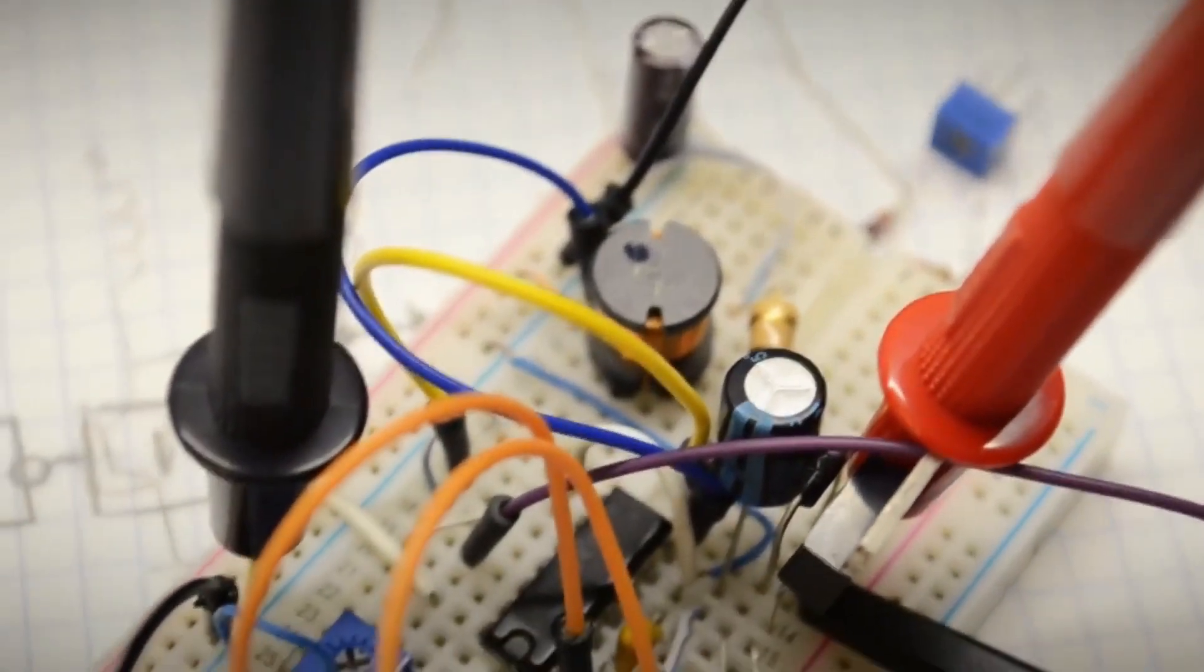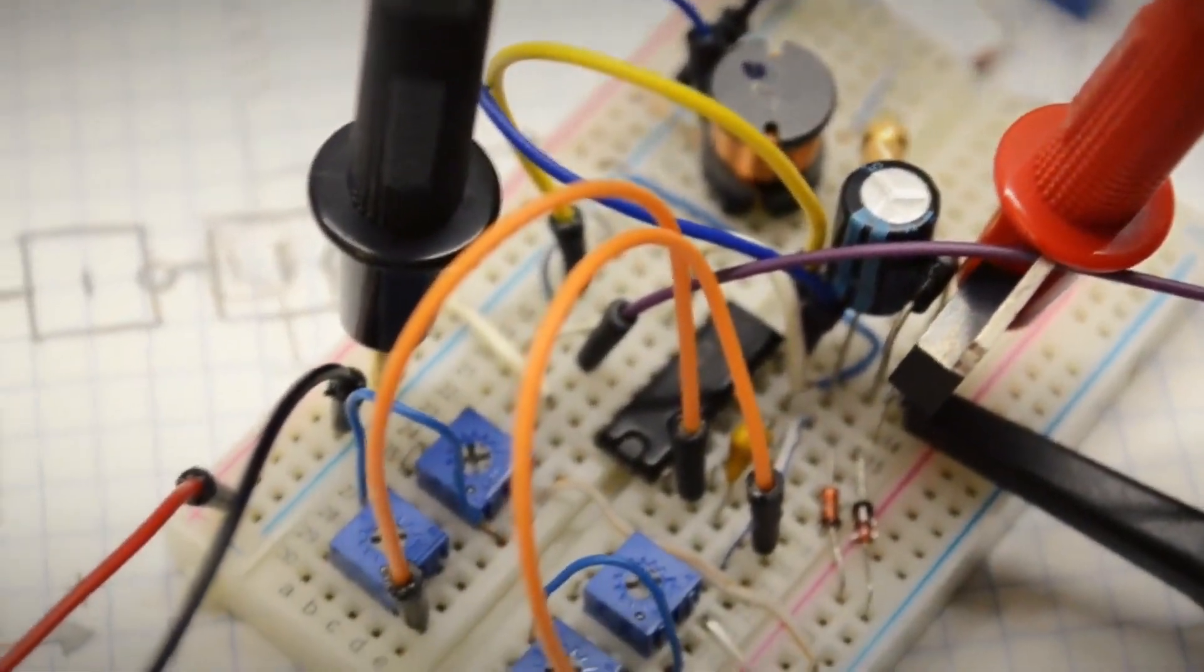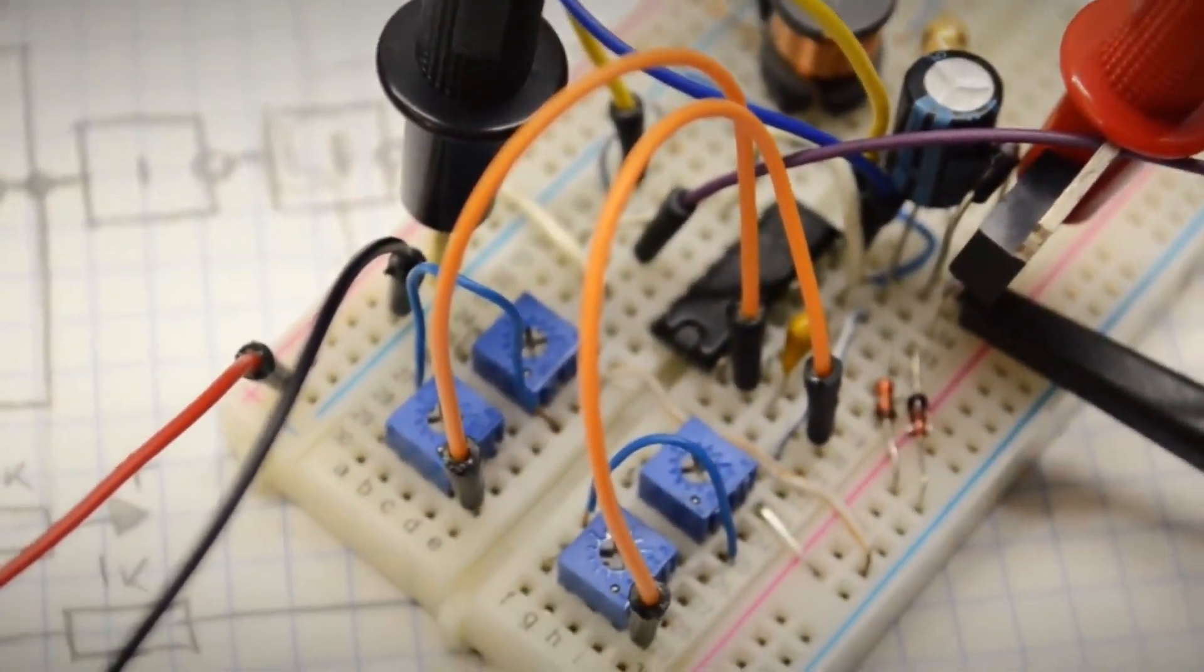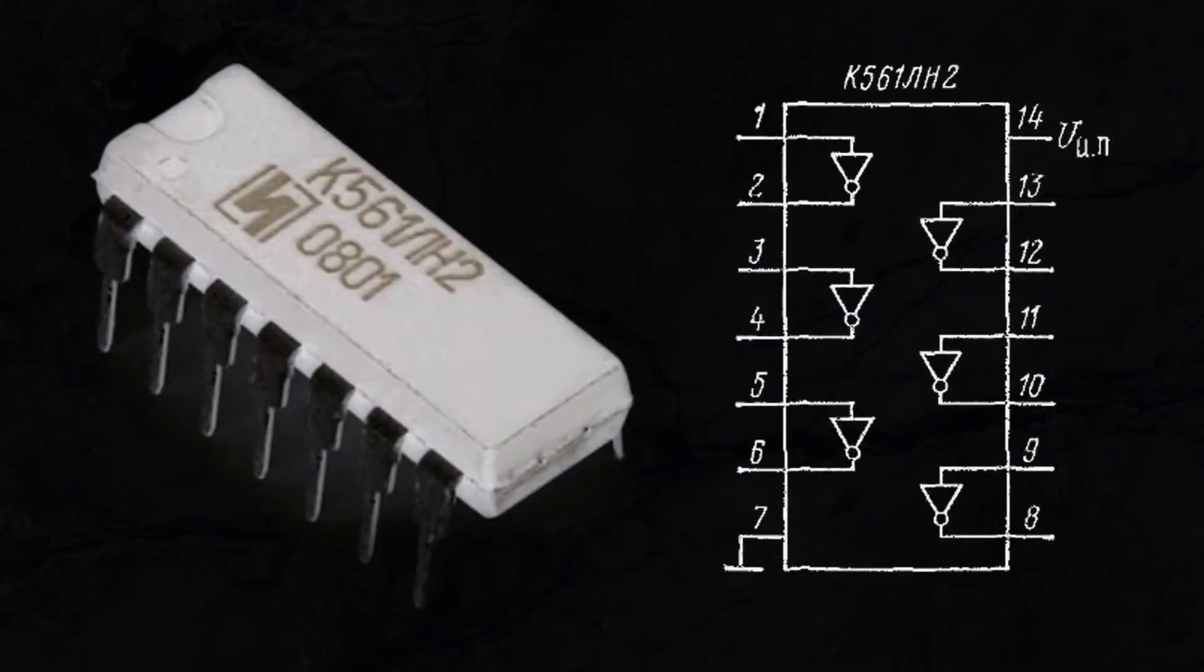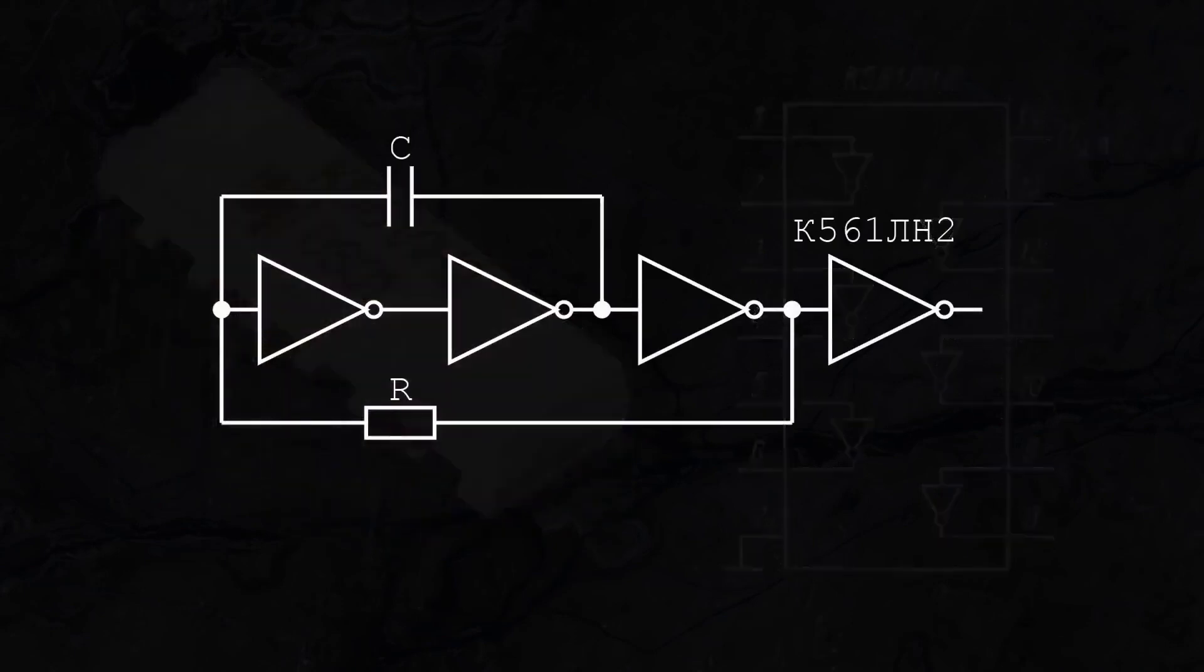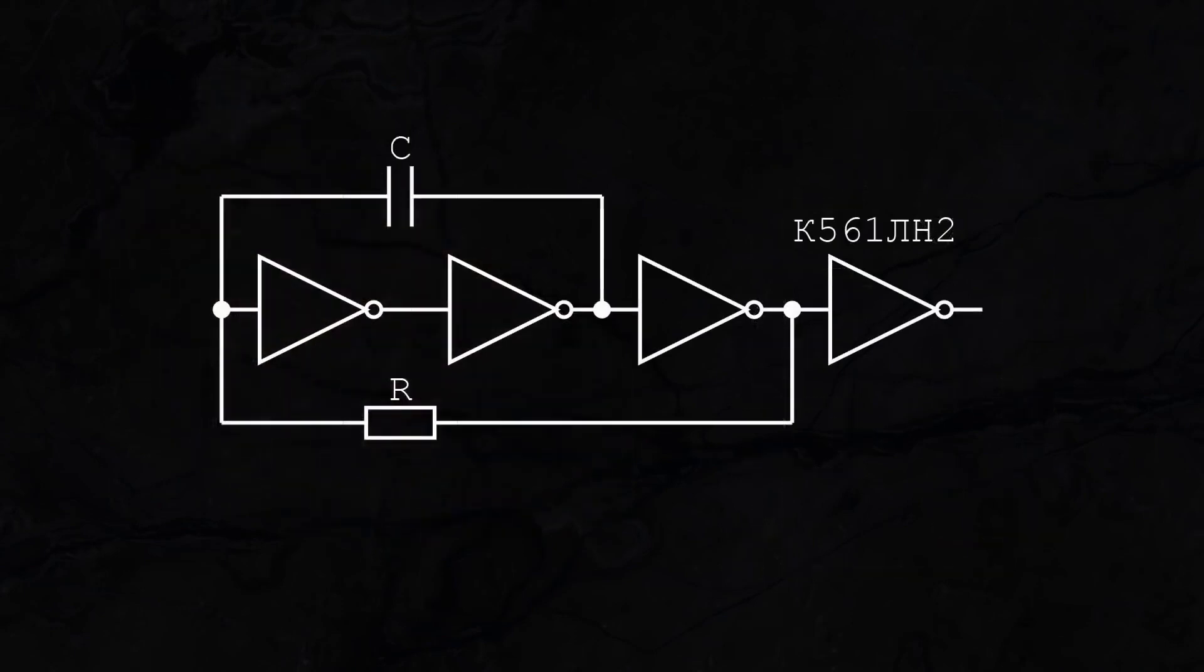To get a feel for how such a converter works, I suggest assembling a simple circuit from discrete components. To really understand and see how everything operates, let's take the K561LN2 chip. This is six inverters in one package. We'll draw a classic generator circuit. We talked about how such a generator works in one of our previous videos.